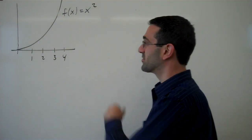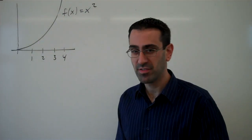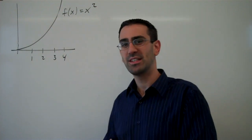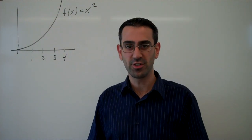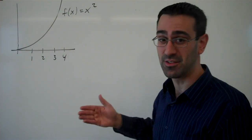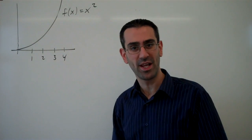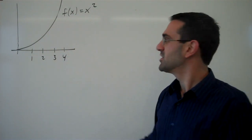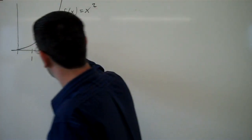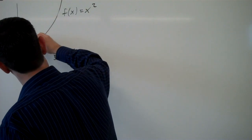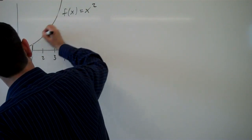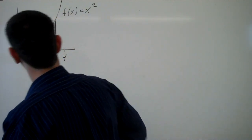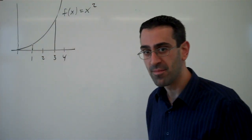Suppose that we have a continuous function like f of x equals x squared, and again we're interested in the area under the curve. Maybe this is a velocity function and we want to estimate a distance or something similar. So we want to find the area from x equals 1 to x equals 3.